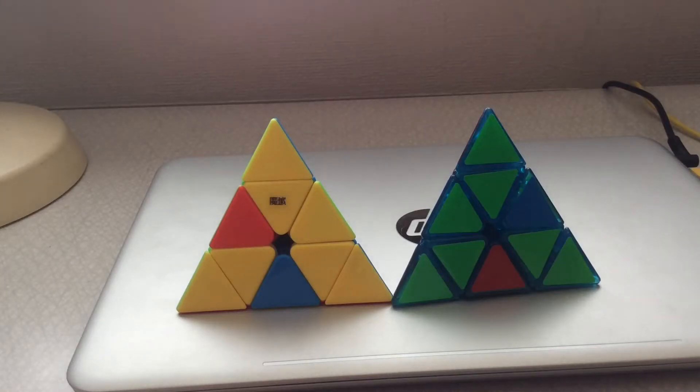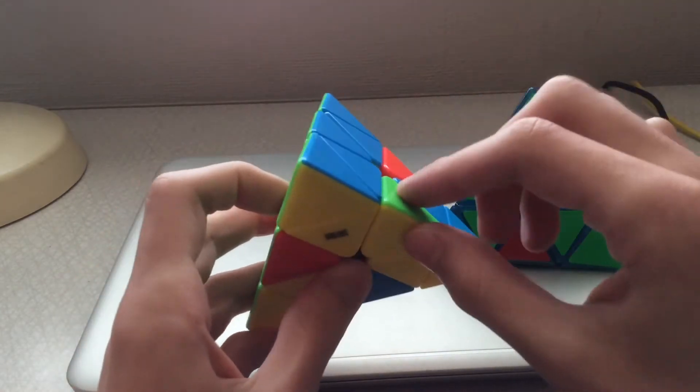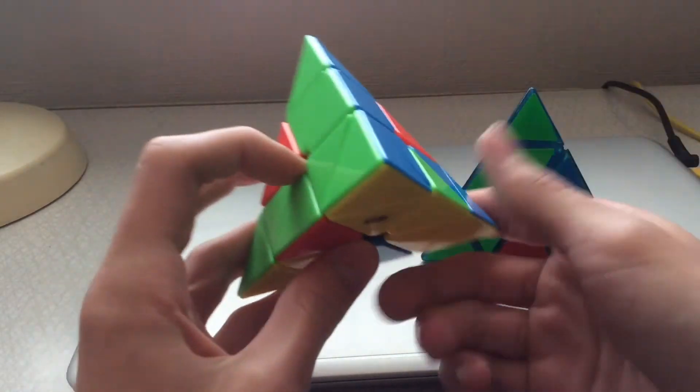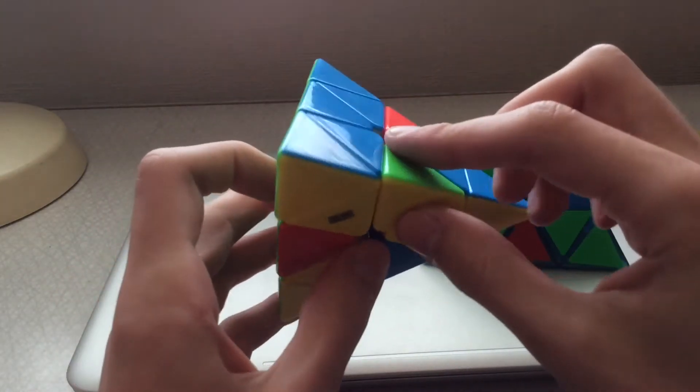Okay, so this is going to be a tutorial on the bell method for pyramids. For those of you who don't know what the bell method is, it is when you solve the top but with the edge kind of oriented so you can solve it with R prime L prime.